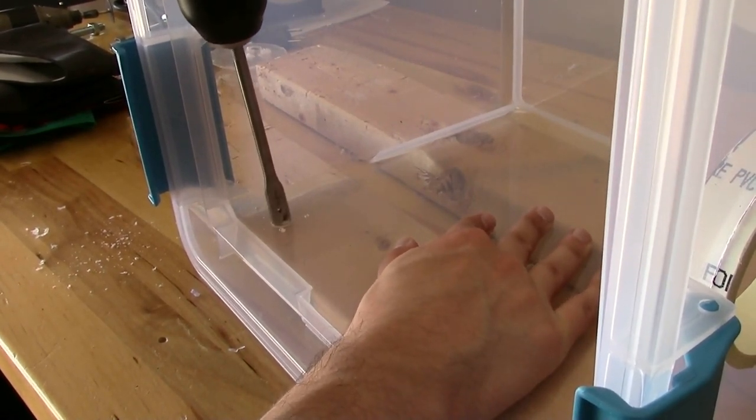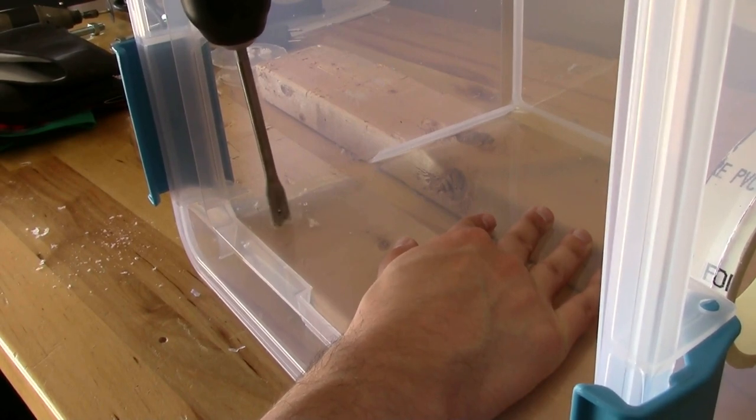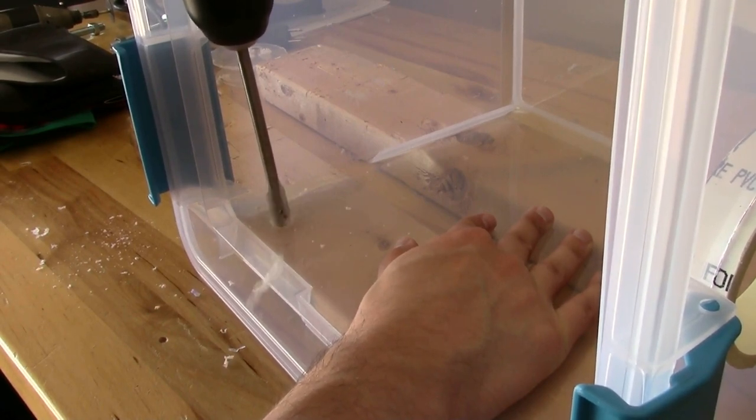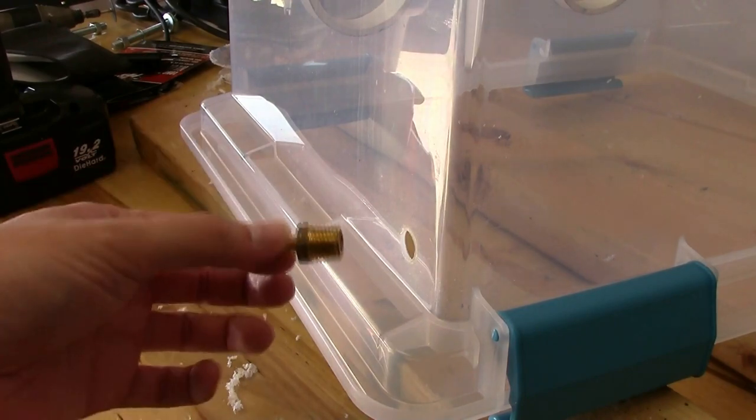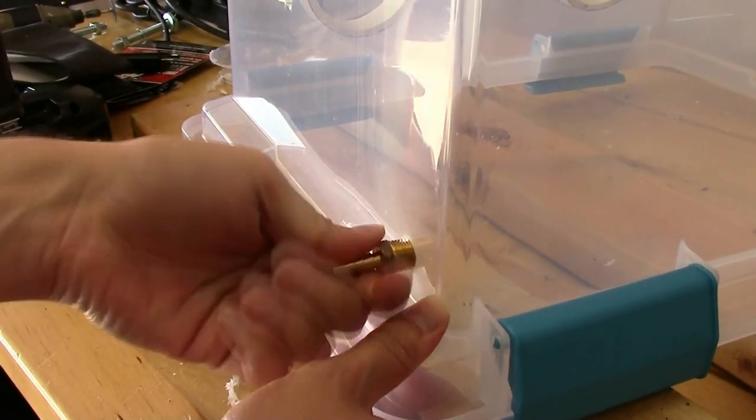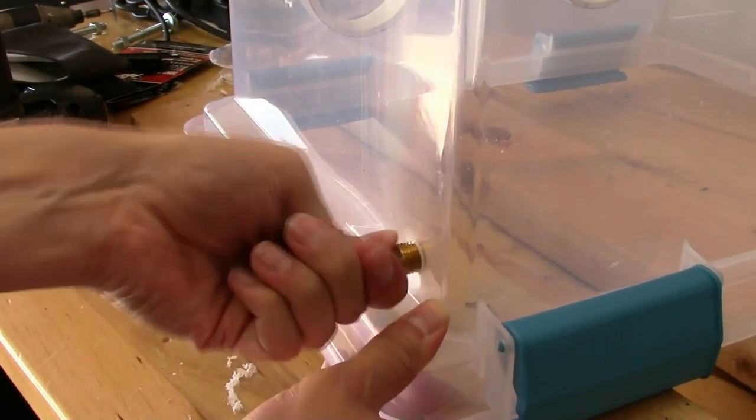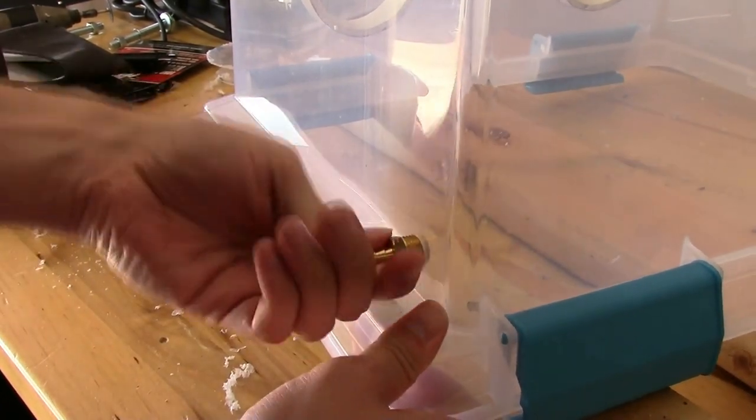Forgive me for the lack of audio here. I actually had the mic muted when I recorded this segment, so go figure. But you can see it makes a nice clean hole. So I'll just flip the box back right side up and now I can thread the hose barb in place.